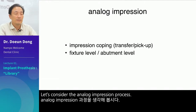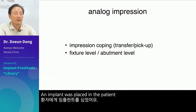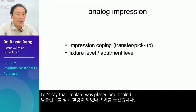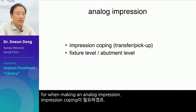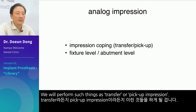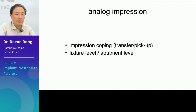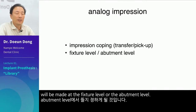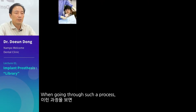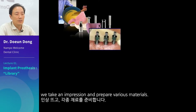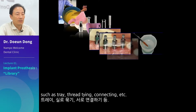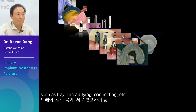Let's consider the analog impression process. An implant was placed in the patient and healed. If you take an impression after that, you will need impression coping for an analog impression. We will perform transfer or pick-up impression, and decide whether the impression will be made at the fixture level or the abutment level. There are complex processes such as tray, thread tying, and connecting.